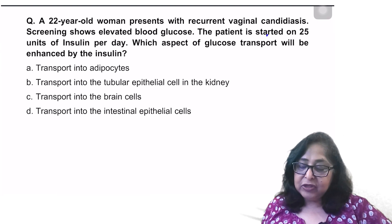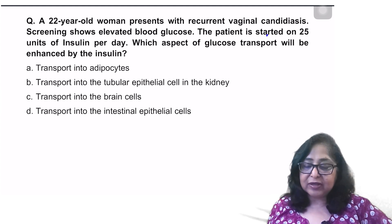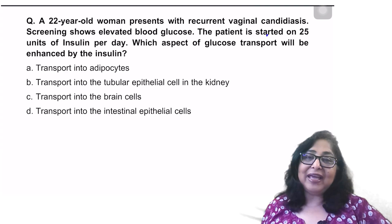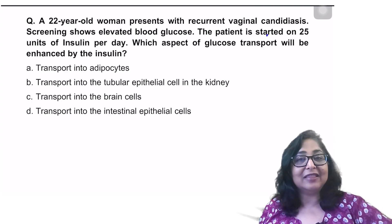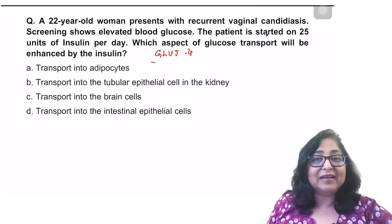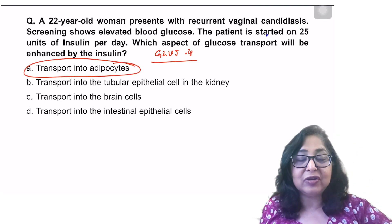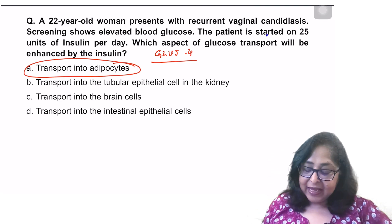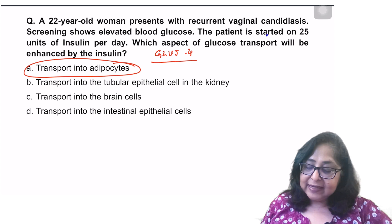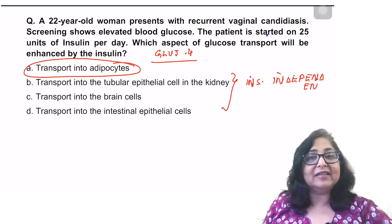Question 2: A 22-year-old woman presents with recurrent vaginal candidiasis; screening shows elevated blood glucose and she is started on 25 units of insulin per day. Which aspect of glucose transport will be enhanced by insulin? The target organs for insulin are adipocytes and muscle cells. Insulin will increase GLUT4, which is an insulin-dependent transporter in adipocytes and muscle cells, so transport of glucose into adipocytes will increase. Transport into tubular epithelial cells, brain cells, and intestinal epithelial cells is insulin-independent and will not be affected.